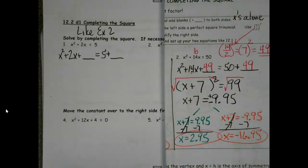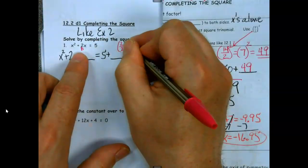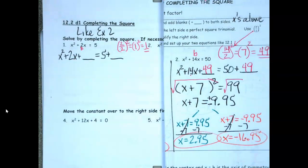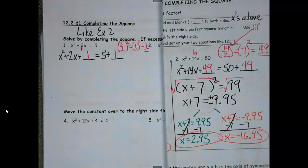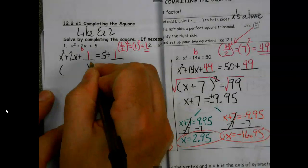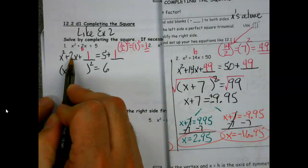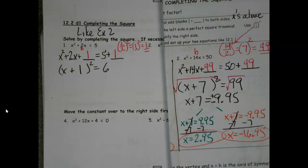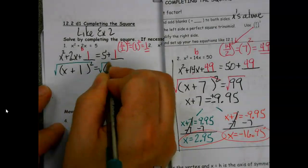Whether you do the little side work or not, we're going to take our b value, divide it by 2. 2 divided by 2 is 1, and we're going to square it - always positive numbers into the blanks. Once we've got our blanks filled, remember the shortcut for the left side: take that b value positive 2, divide by 2, which is 1. If you did your side work you even got it right there, and just that quick we're already at the stuff we've been doing. My next job is to get rid of the squared.